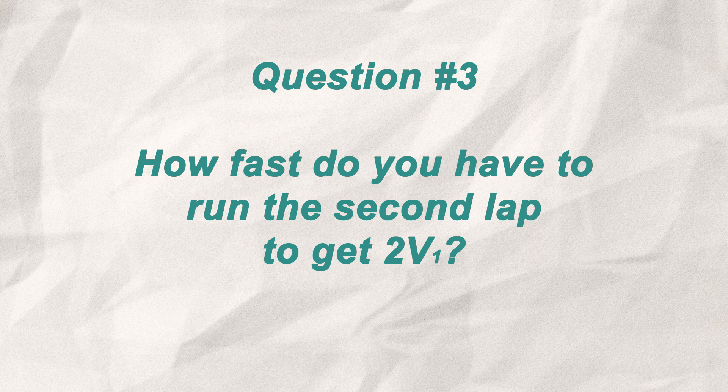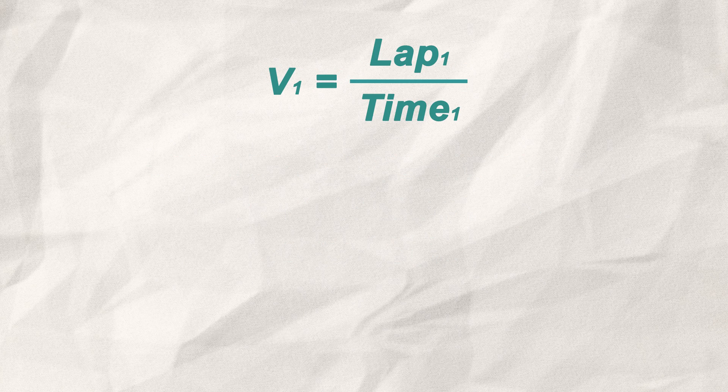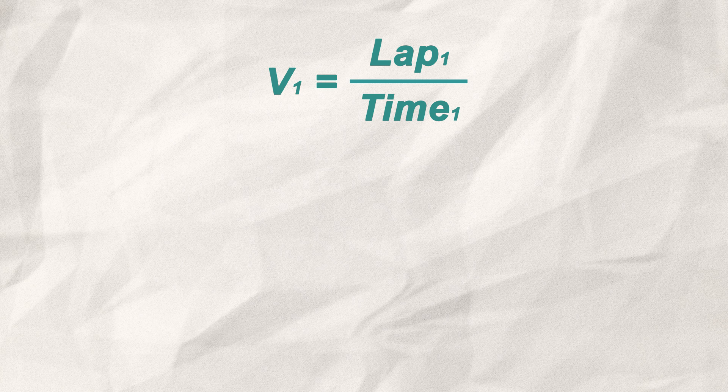Question 3. How fast do you have to run the second lap to get the total average speed, which is twice the average speed of the first lap? To get the average speed of my first lap, I simply divide the distance with the time it took to complete it.